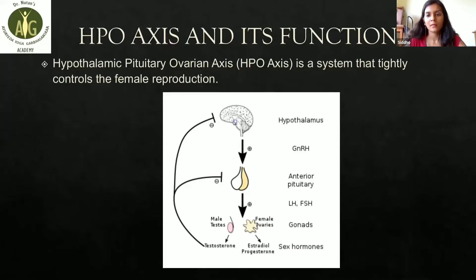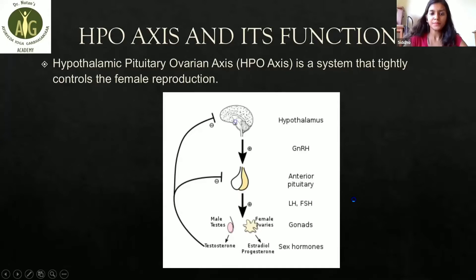The third component is the ovaries. The two ovaries located in a woman's pelvis secrete two hormones: estrogen and progesterone. Both are sex hormones responsible for different things. Estrogen is responsible for the development and regulation of the female reproductive system, and progesterone is a sex hormone involved in the menstrual cycle and pregnancy.